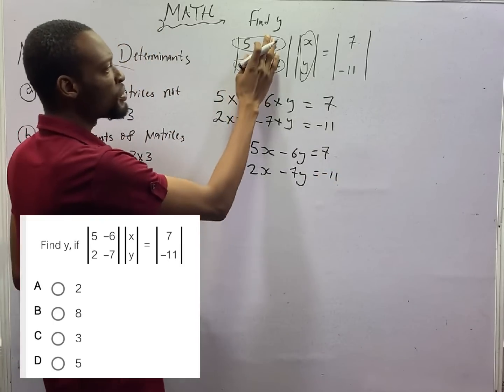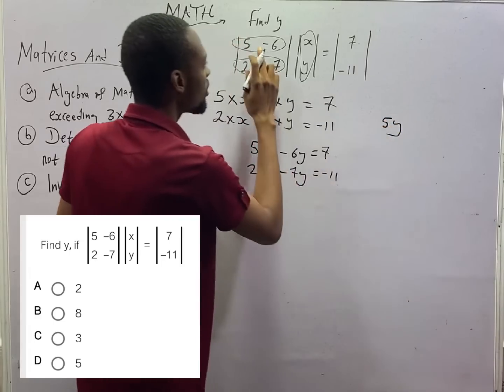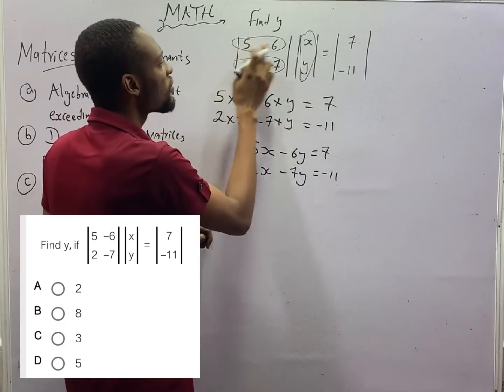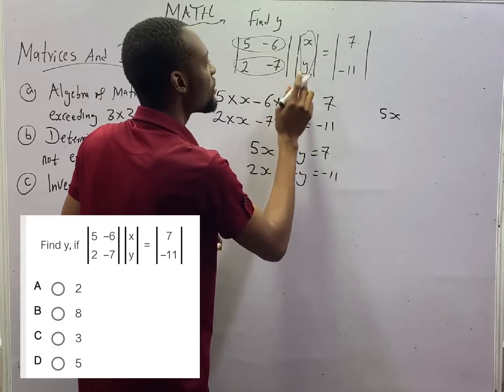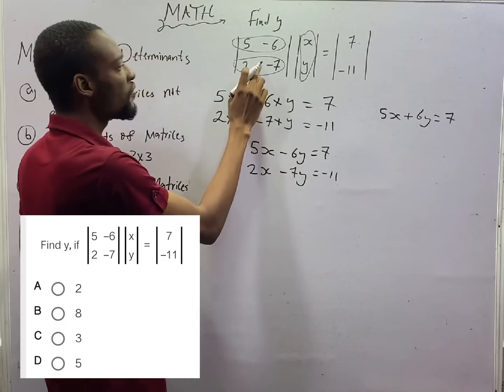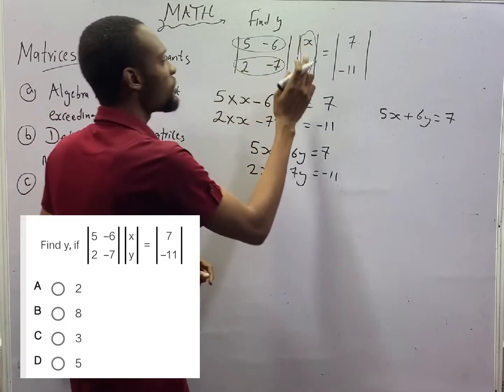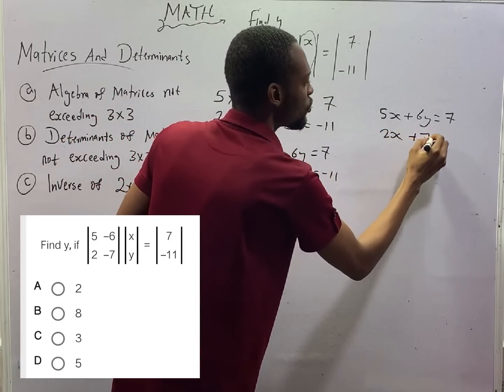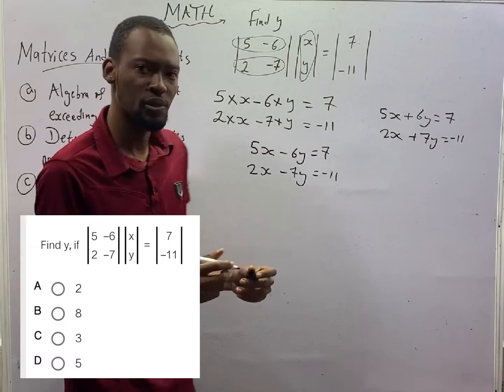If here we have to be plus, it will simply be 5S plus 6Y, which will equal to 7. If this we have to be plus, the equation will be 2S plus 7Y is equal to minus 11. That is how you multiply matrices.